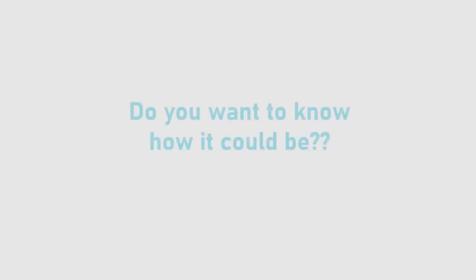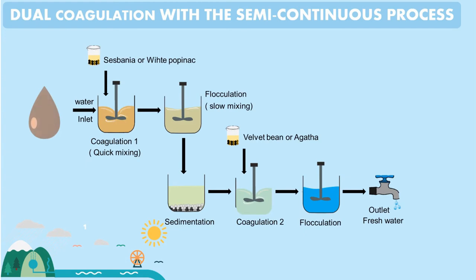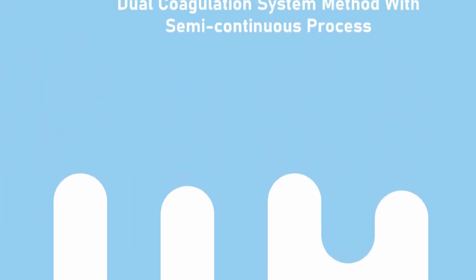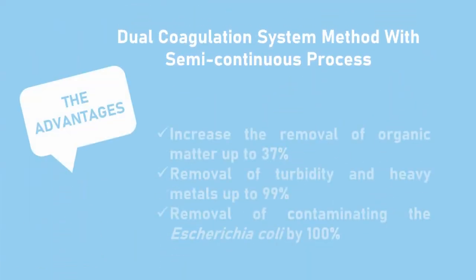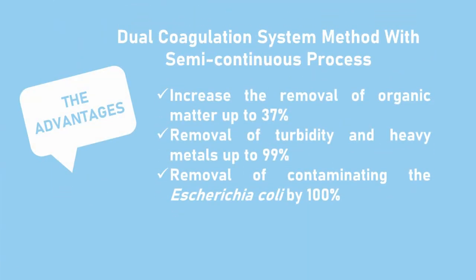The water sample and coagulants are put into reactor one, and then the coagulation-flocculation process is carried out. After sedimentation, the water from step one is treated again in step two with the same process. The advantages of this method include increased removal of organic matter, turbidity, heavy metals, and E. coli contaminants.